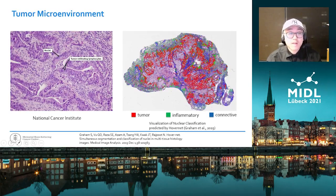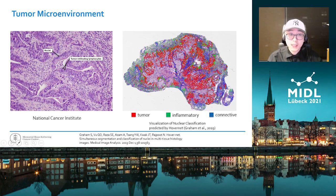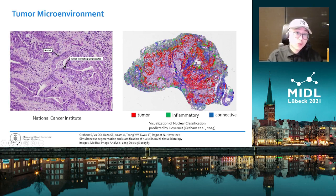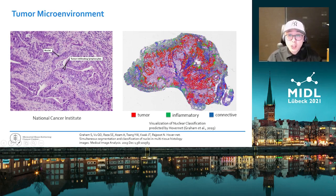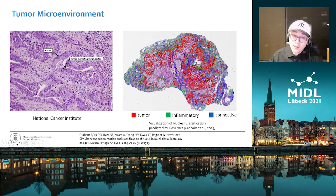We all know that tumor microenvironment plays an important role in the growth and metastasis of cancer. One aspect of tumor microenvironment is the spatial interactions between various kinds of different nuclei in cancer tissue. For example, the infiltration of tumor cells by lymphocytes. Histopathology images provide a holistic morphological picture for cancer tissue, and therefore serve as an important tool both for basic research and clinical assessment of cancer.